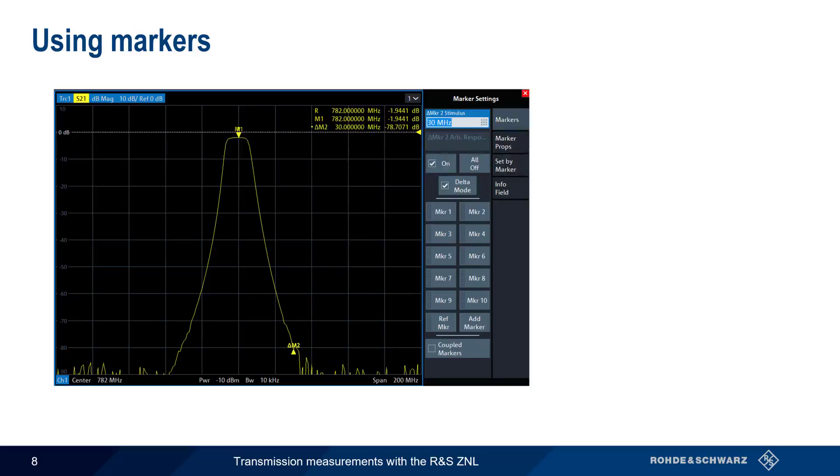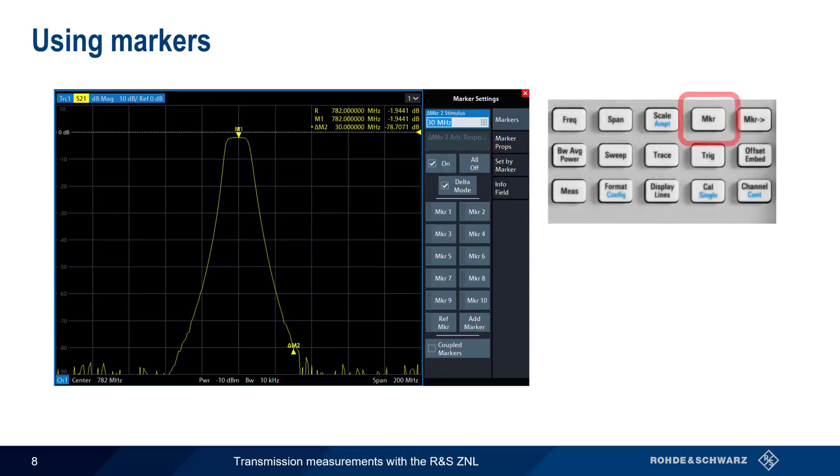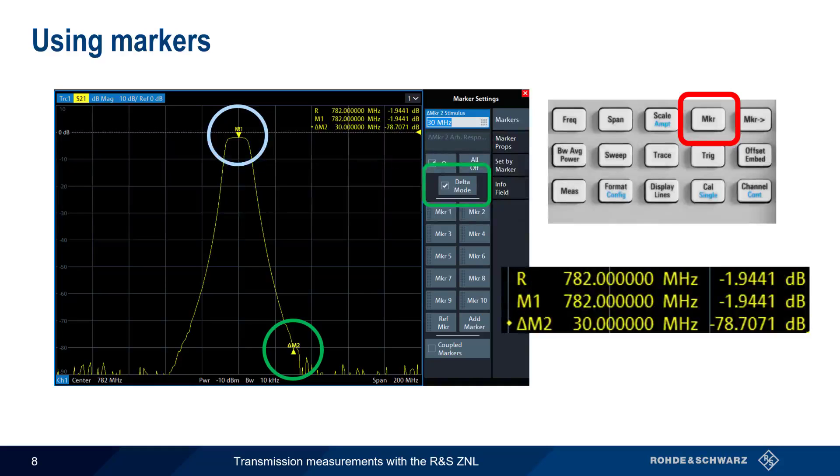We can get more accurate numbers regarding the filter's center frequency, bandwidth, and attenuation, both inside and outside of the passband, by using markers. Markers are accessed using the marker hard key. For example, if we place a regular marker in the middle of our passband, and a so-called delta marker at some point along the filter's skirt, we can see that at the center of the passband, 782 megahertz, we have only about 2 dB of loss. But this increases to over 80 dB of loss, or rejection, once we're 30 megahertz away from the center.